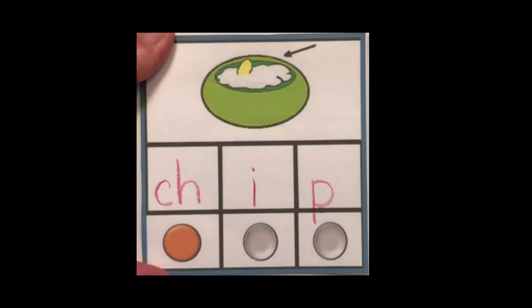So now have kids place their finger on each of the dots and say the sound. Ch, i, p. Have them do it again. Ch, i, p. And then all together. Chip.